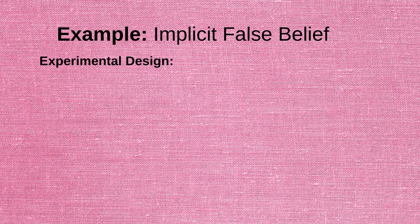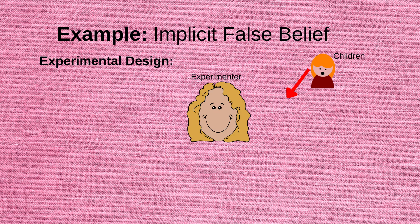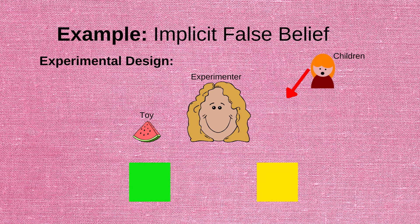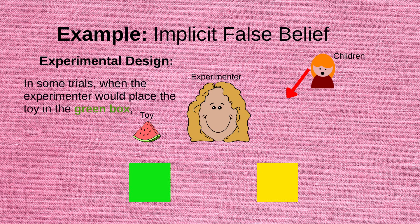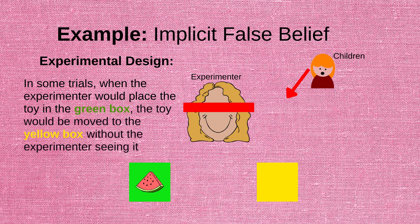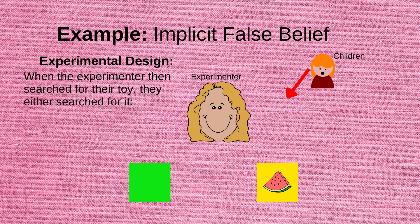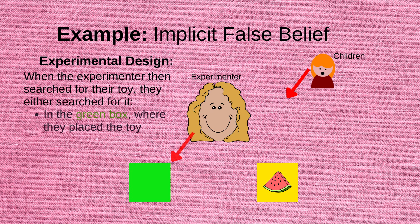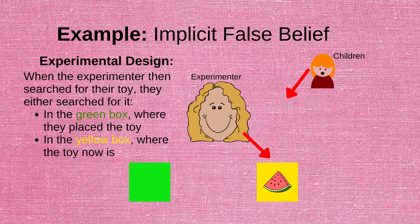In their experiment, children were instructed to watch as an experimenter placed a toy in one of two boxes, either a green one or a yellow one. In some trials, when the experimenter placed the toy in the green box, the toy was moved to the yellow one without the experimenter seeing it. Then, when the experimenter would look for their toy, they would either search for it in the green box where they placed it, or in the yellow one where the toy now actually was.